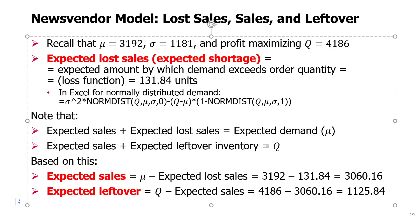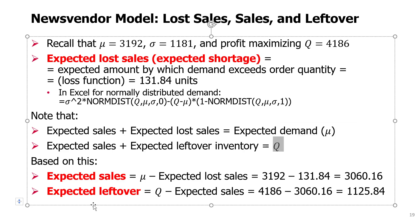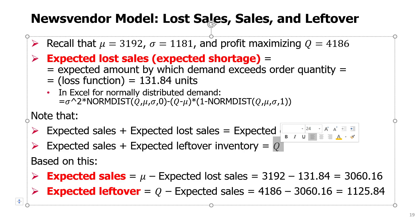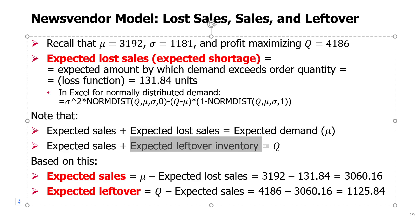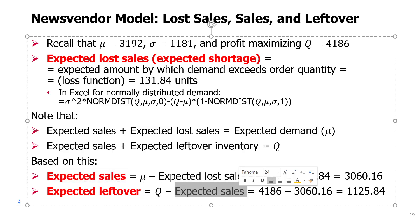Once we know expected sales and we know the quantity we ordered — 4,186 in this example — part of this quantity we will sell and the rest will be the leftover inventory. The same logic works on expectations: I have this fixed quantity I will order, part of it will be expected sales, and the remaining part will be expected leftover inventory. So I can calculate expected leftover inventory as Q minus expected sales, which gives us 1,125.84 in this example.